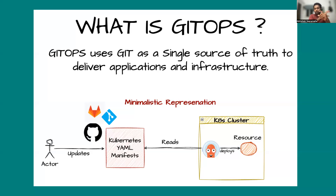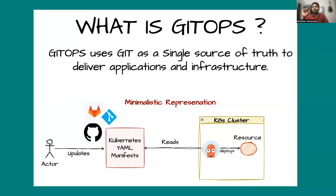A DevOps engineer who wants to change the node configuration submits a pull request to the Git repository containing the node.yaml. It is reviewed by another DevOps engineer on the team, and once approved, the change is merged. Then a GitOps tool picks this change and deploys it onto your Kubernetes cluster. The actor submits a pull request to update any Kubernetes YAML manifest — it can be a pod.yaml, deploy.yaml, node configuration YAML, or anything on a Kubernetes cluster.